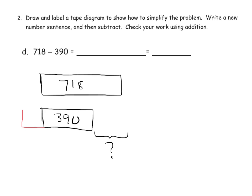It's going to be 400, which means we need to add 10 to each of these numbers. So in doing that, we changed the problem, but we did not change the gap at all. So the problem becomes 728 minus 400. And 700 minus 400 is 300. So our answer is 328.